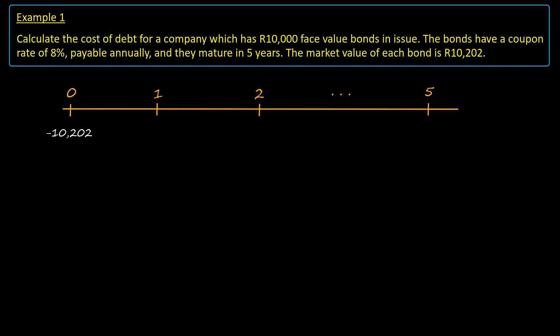Next, we calculate the annual coupon amount as 8% times R10,000, which is R800, and enter this against each of the notches from 1 to 5. At T equals 5, we also enter the face value of R10,000 because this is returned to the investor on this date.